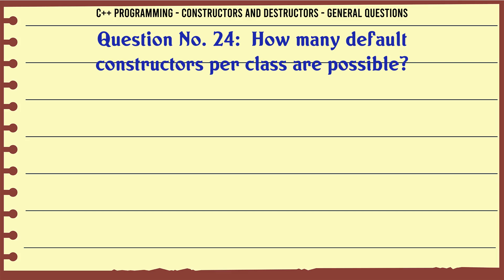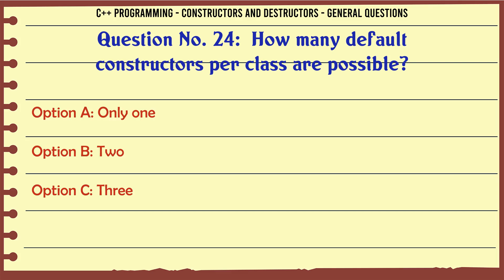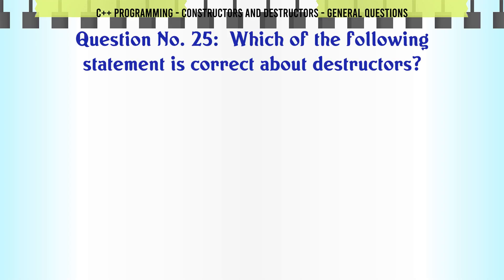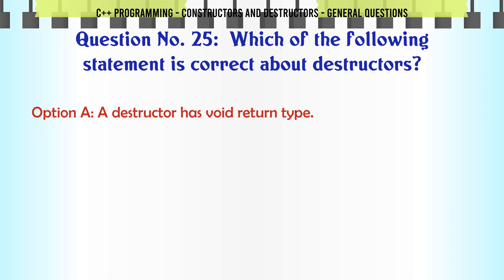How many default constructors per class are possible? A. Only one. B. Two. C. Three. D. Unlimited. The correct answer is Only one.